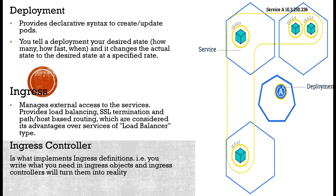Ingress is another important component of Kubernetes. It manages external access to services and provides load balancing, SSL termination, and path and host-based routing. The ingress controller implements ingress definitions — you write what you need in ingress objects and the ingress controller turns them into reality.